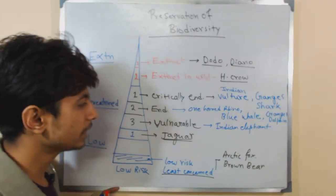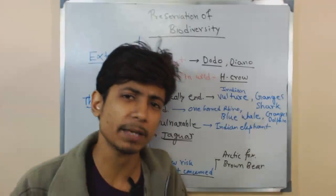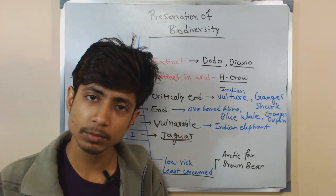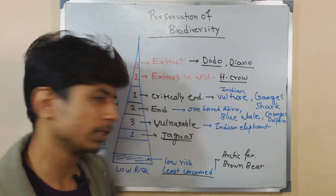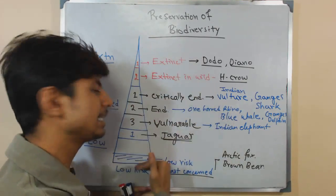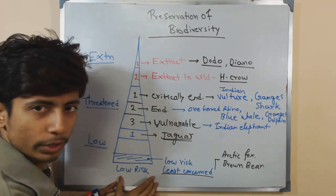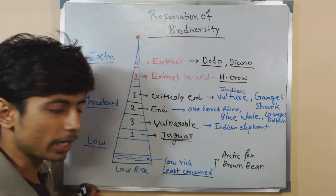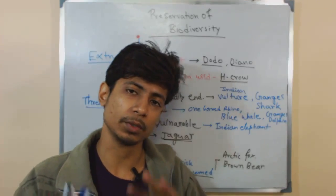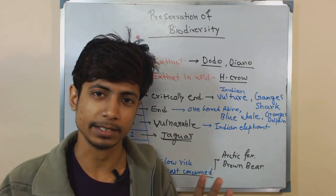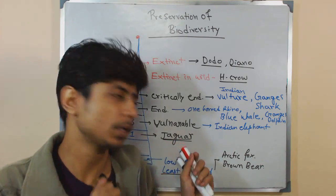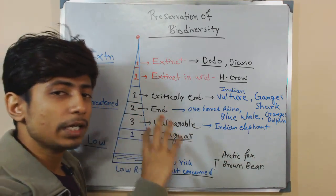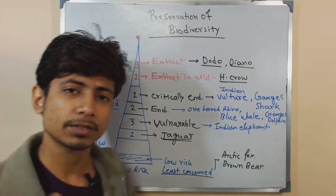You can choose examples according to what you can memorize best, but what matters is understanding this key pyramid — from low risk at the bottom moving upward toward extinction at the top. Practice this because exams sometimes give you an animal name and ask whether it is endangered, vulnerable, or threatened. You can't answer if you don't know this framework, so that is the key thing to understand.